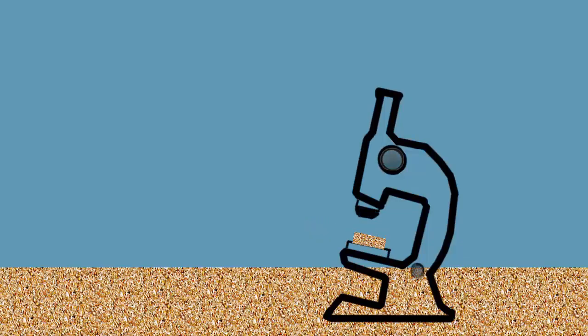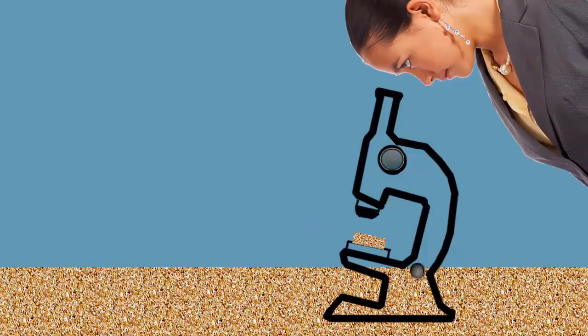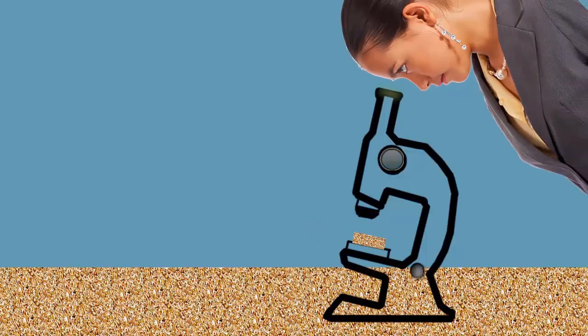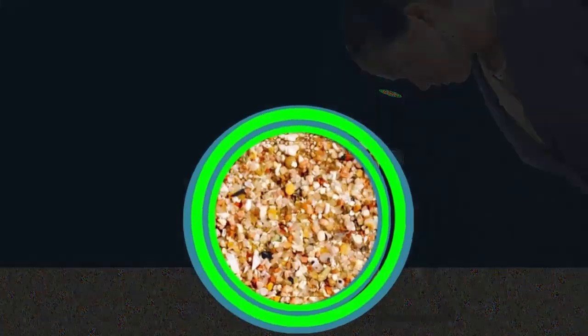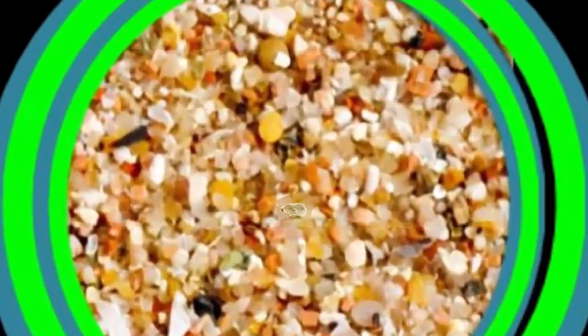Our scientist put some sand under the microscope. And now she looks through the top to see the magnified sand. This is what she sees. And now she's zooming in more. Magnifying the sand grain a million times would let her see the sand's building blocks.